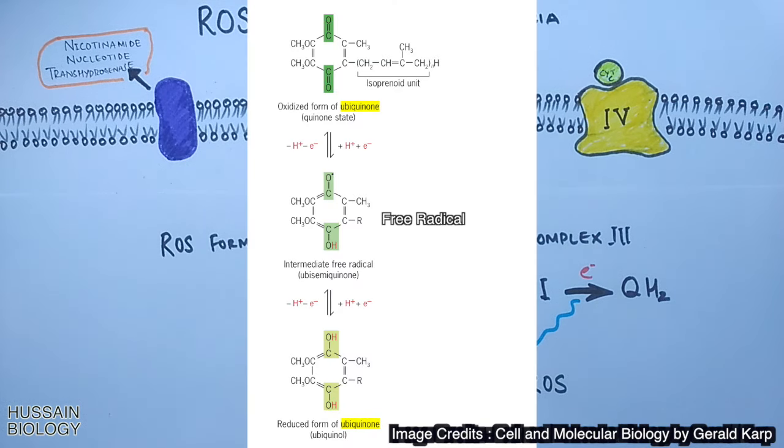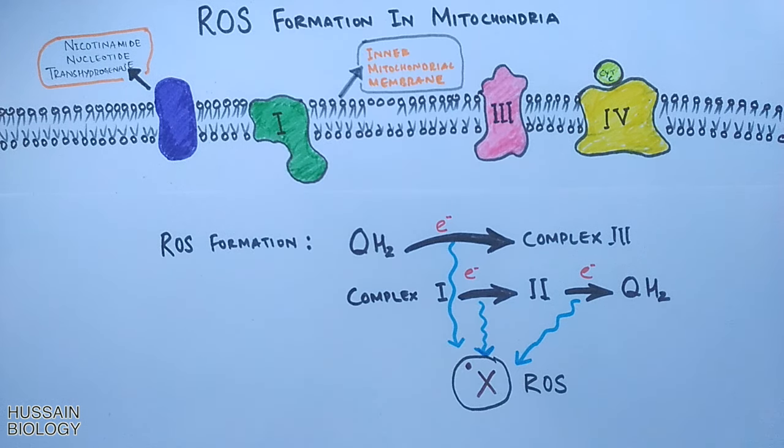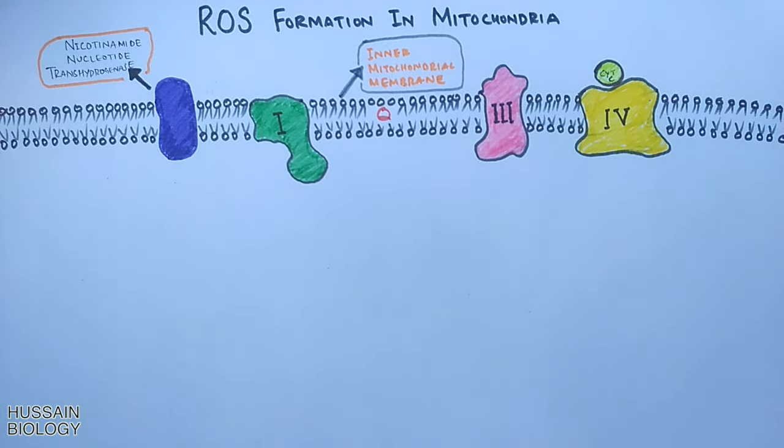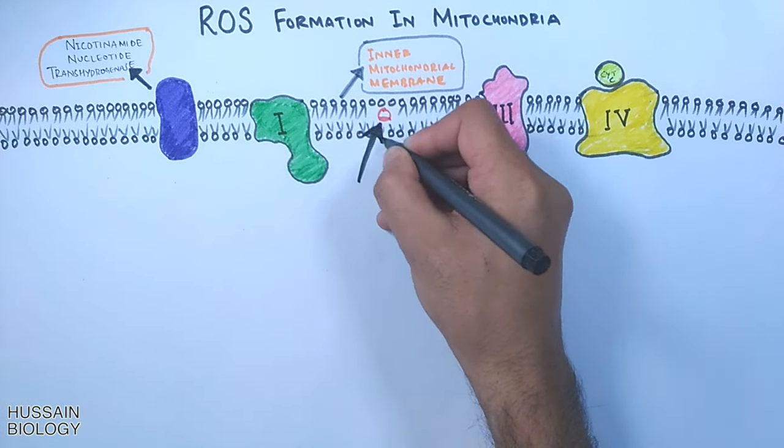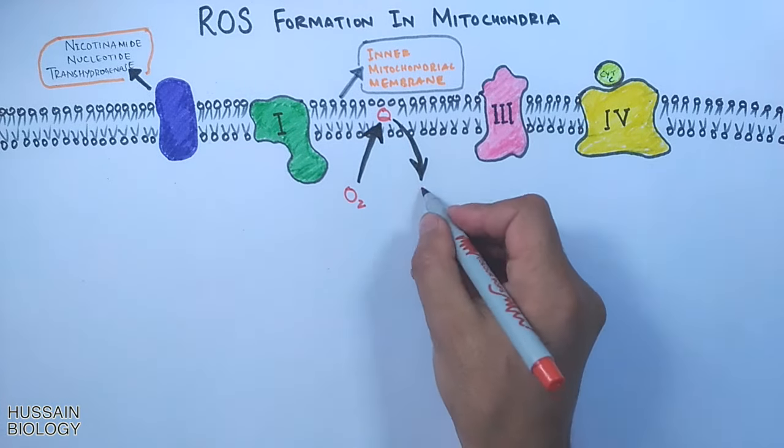Here in this diagram we see the formation of ubisemiquinone in Q cycle. This is a radical molecule and it gets spontaneously converted into stable ubiquinone, but when the rate of electron entry into the respiratory chain and the rate of electron transfer through the chain are mismatched, superoxide radical production increases at complex one and complex three as the partially reduced ubiquinone radical donates an electron to O2 as shown in the diagram.